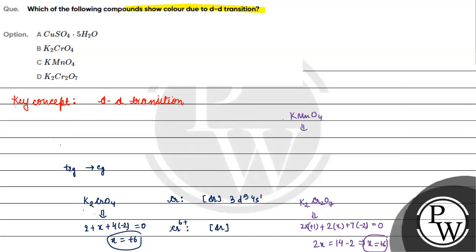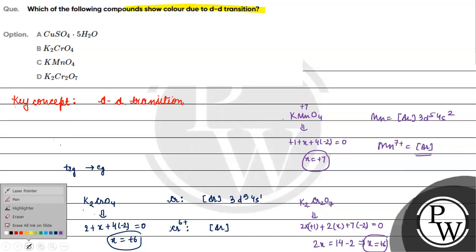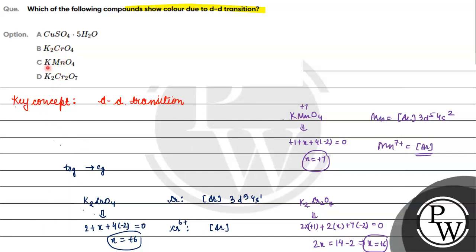For KMnO₄: +1 + X + 4×(−2) = 0, so X = +7. The Mn electronic configuration at +7 is [Ar] 3d⁰ — there are no electrons in the d orbital. So d-d transition will also not be possible for KMnO₄. These three options will not show d-d transition.